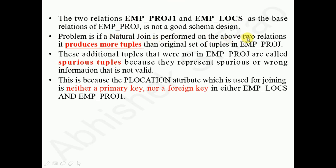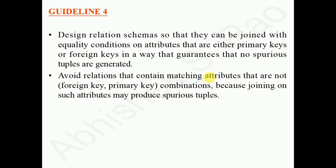If a natural join is performed on the two relations, it produces more tuples than the original set in employee-project. These additional tuples are called spurious tuples because they represent spurious — wrong — information that is not valid. When applying natural join, ensure that only the primary key and foreign key share the same attribute header. Otherwise, use a theta join specifying equality conditions among the relations. Guideline four: design relation schemas so joins use equality conditions on primary keys or foreign keys, guaranteeing no spurious tuples are generated.